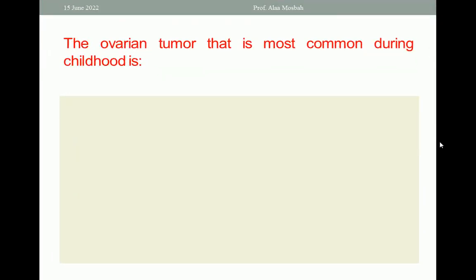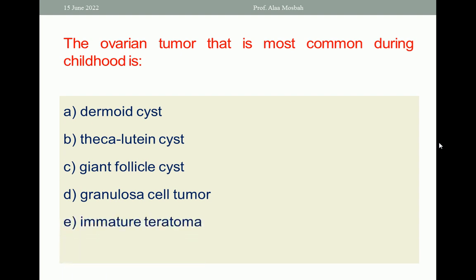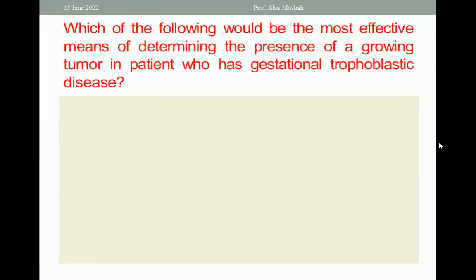The ovarian tumor that is most common during childhood is: A. dermoid cyst; B. endodermal sinus tumor; C. dysgerminoma; D. mature cystic teratoma. The one best response is mature cystic teratoma.